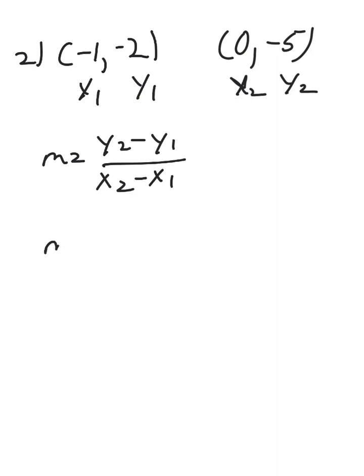So m equals negative 5 minus negative 2 over 0 minus negative 1. So notice how I got my y2 here, and I plugged it in here. And then my y1 was from here, plugged it in up here. And then x2 right here, x1 right here, and I plugged it in here at the bottom.